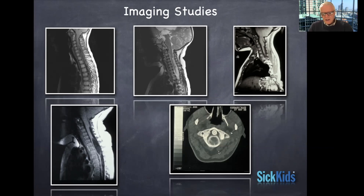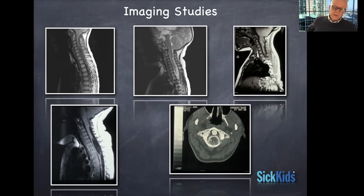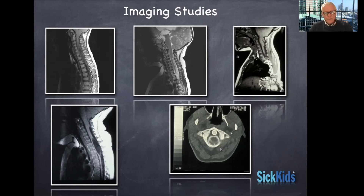Here you're seeing a CT myelogram — a study that's almost never done these days. When I was a medical student, resident, and junior faculty about 30 years ago, we were still doing these studies to look at the posterior fossa and see if the tonsils had descended through the foramen magnum, indicating a Chiari malformation. This is a mixture of Chiari I and Chiari II images.